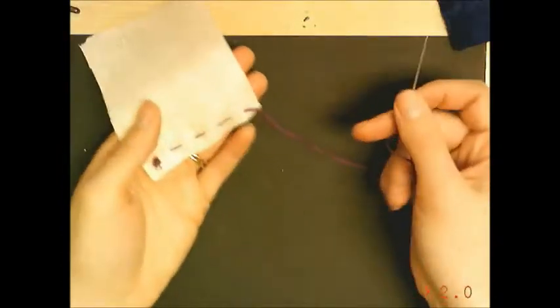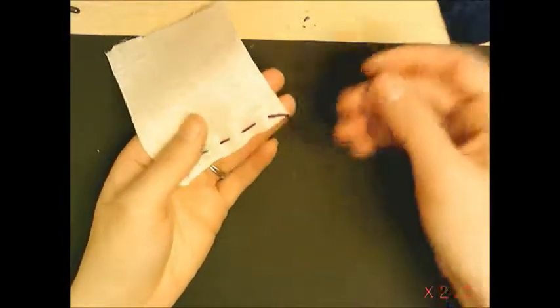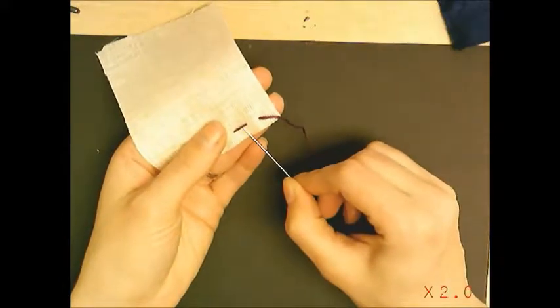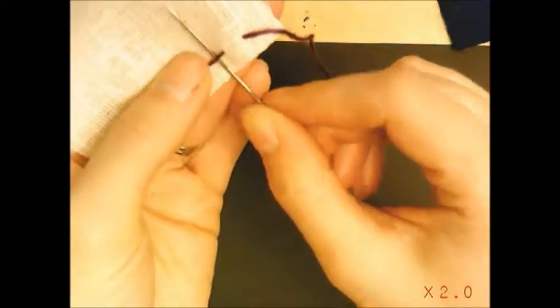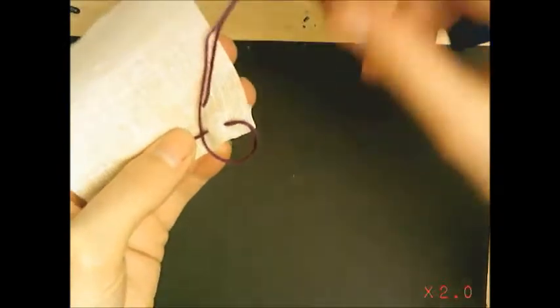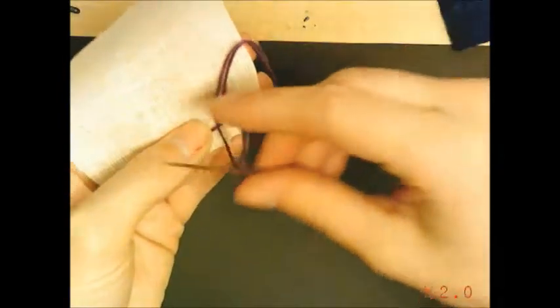So what we do is we flip it on the back. You always want your knots to be on the back. You're going to go under your previous stitch, okay let me get a little closer, go under your previous stitch like that, pull it through. And then you see that loop that you're creating there on the end, come back around, put your needle through that loop.